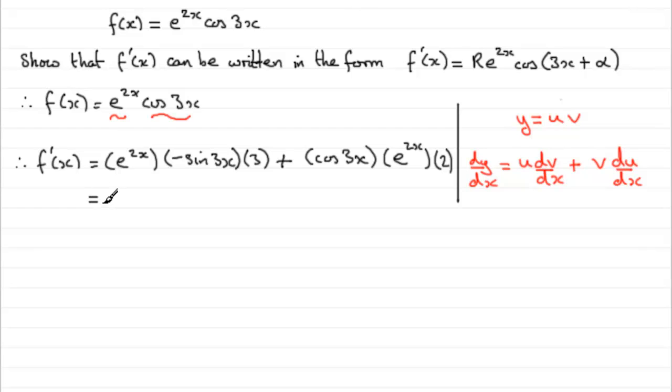So we just need to clean this up. I can see that this term is a negative term and this term is a positive term. So I'm going to write this term first of all as 2e to the 2x multiplied by cos 3x, so we don't need any brackets then. 2e to the 2x cos 3x. Now we pick up on this term as minus and then 3e to the 2x sin 3x.